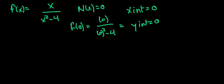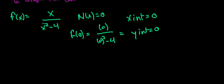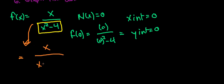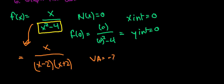The next thing is to find the vertical asymptotes, and we do that by looking at the denominator — what's going to make it equal to 0? We can factor this as x / [(x-2)(x+2)]. I like to leave the numerator in just in case — if it matched a factor below, that would be a hole. But x is not going to cancel out with anything, so we have vertical asymptotes at x = -2 and x = 2.